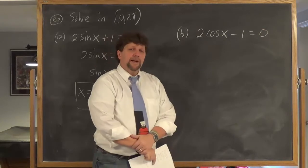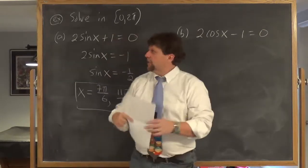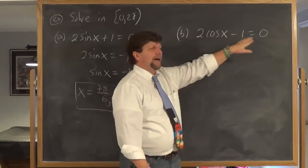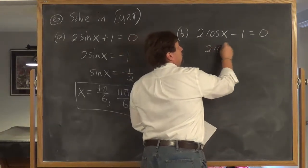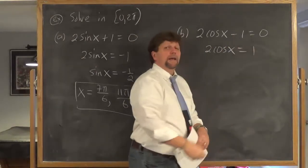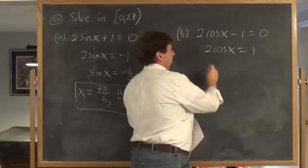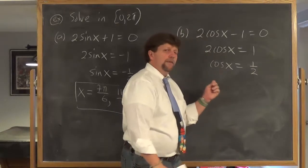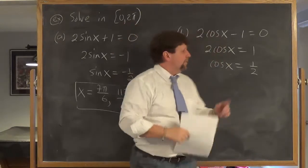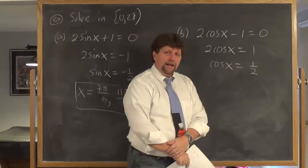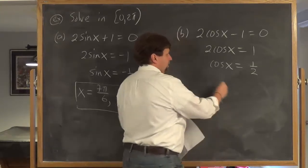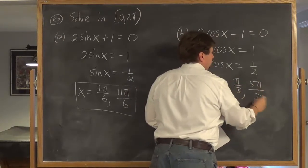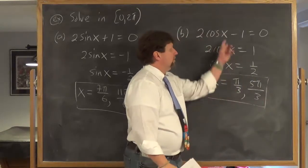For part b, solve 2cosx - 1 = 0. Similar to part a, we add 1 to both sides to get 2cosx = 1, then divide both sides by 2 to get cosx = 1/2. Back to a unit circle question: where on the unit circle does cosine equal 1/2? There are two points — those occur at x = π/3 and 5π/3. These are the two solutions.